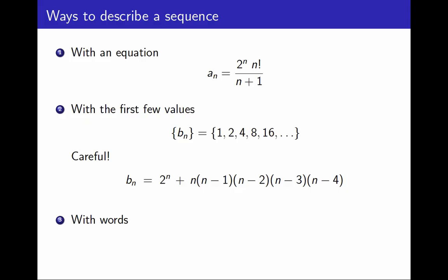A third way to describe a sequence is with words, with an explanation. For example, I could describe the sequence of primes, where p sub n is the nth prime. This is a perfectly well-defined sequence. We know what the terms are. The first few ones are 2, 3, 5, 7, 11. And the reason we do it this way, with words, rather than with an equation, is because there is not a nice equation for it, but the description with words is perfectly valid.